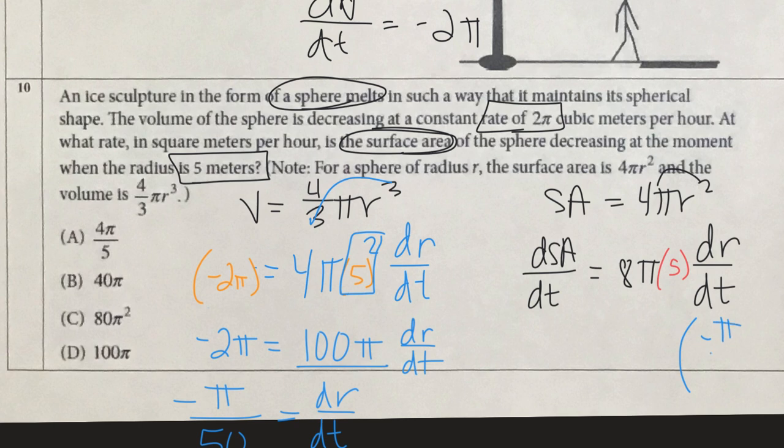Which is good. I'll bring that over here, -π/50, and everything else is going to stay the same. So let's do some simplifying here. 8 times 5, I know that is 40π, equals dSA/dt.